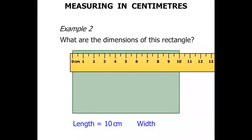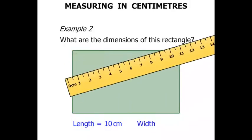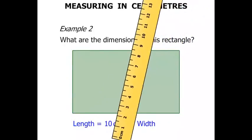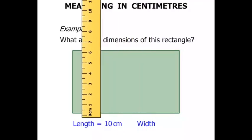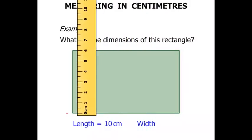Now we need to work out the width, so let's turn the ruler around. Again marking off the 0 centimeters, lining it up. Reading off now, we can see that the width is 6. So the width equals 6 centimeters.